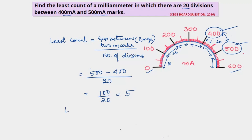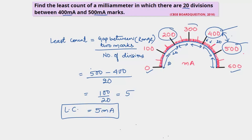The least count is 5 milli ampere. In general, for any range given, for example between 200 and 300, you would subtract 300 minus 200 and divide by the number of divisions between those two marks, which is 20. You just subtract the gap between the two values and divide by the total number of divisions between them. Thanks for watching, take care and bye bye.